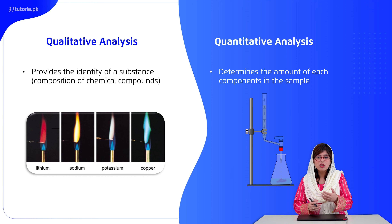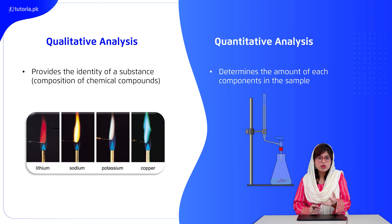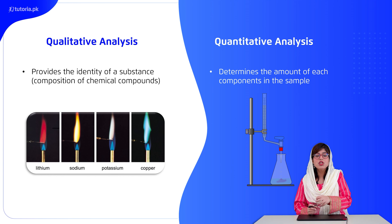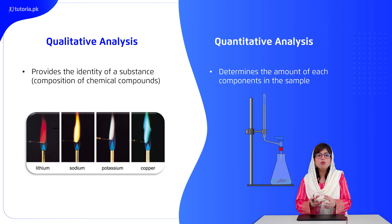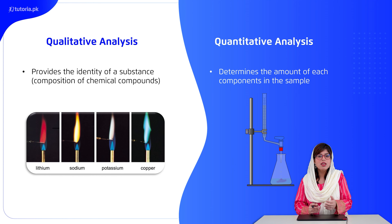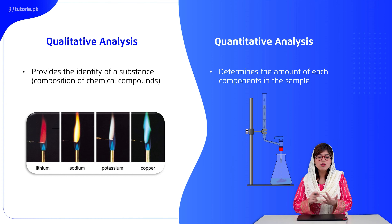Atoms can absorb specific energy and release it in the form of light. When you look at elemental analysis, elements like lithium, sodium, potassium, and copper each give different characteristic colors in a flame test.